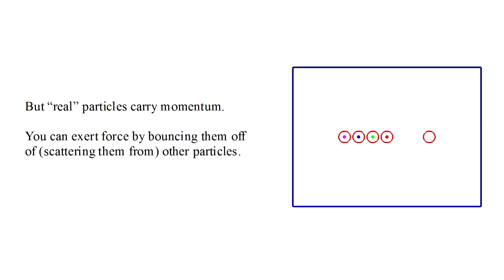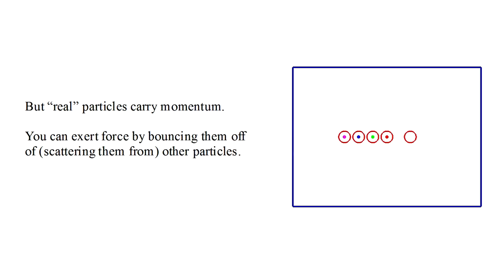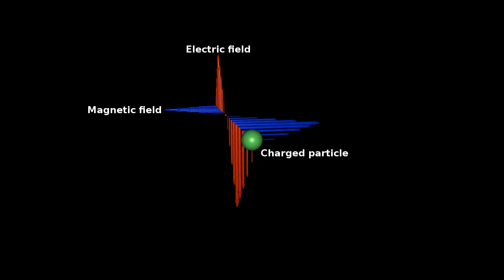Let's continue to try and push back against the idea of particles of light. We might argue that real particles carry momentum, and you can exert force by scattering them off of other particles. If light is composed of real particles, then you should be able to push an object around by shining light on it. Well, it turns out you can.